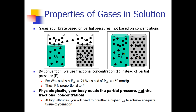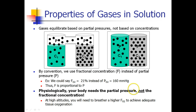By convention, we don't usually talk about partial pressures in the body — we talk about fractional concentrations. This simply means we don't say 160 mmHg of oxygen; we say 21% oxygen. So fractional concentration F is always proportional to partial pressure P. We tend to speak in terms of percent of atmospheric pressure instead of raw partial pressure. This is a little misleading, because your body doesn't really need 21% oxygen — your body needs 160 mmHg of oxygen. If you go to a very high altitude, the fraction of oxygen is still 21%, but since atmospheric pressure is much lower, it won't be 160 mmHg. At high altitudes, breathing 21% oxygen is not enough, and you actually need to breathe a higher FO2 to achieve adequate tissue oxygenation.